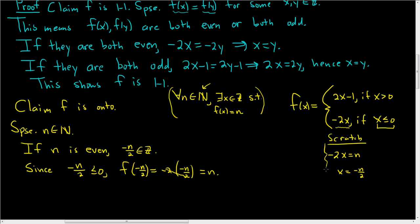We did have to figure it out before we chose it, so negative n over 2 is our x in this definition.